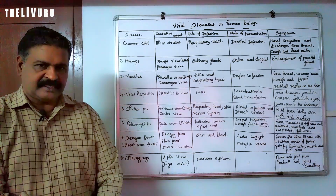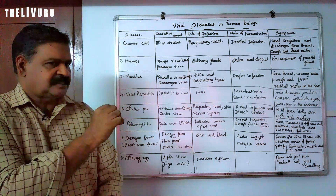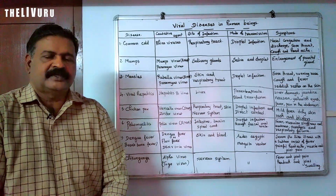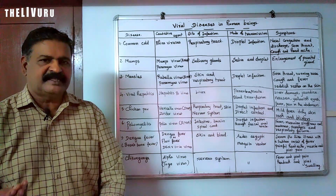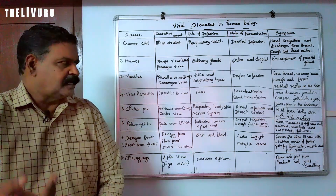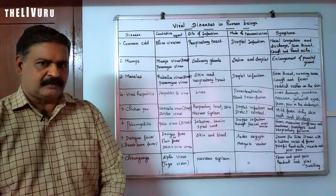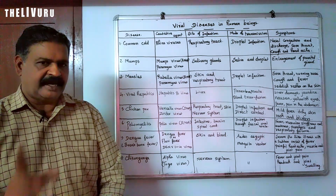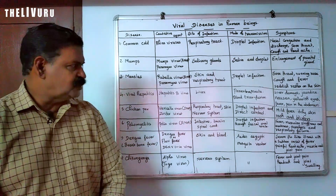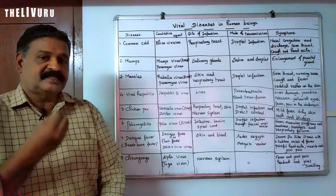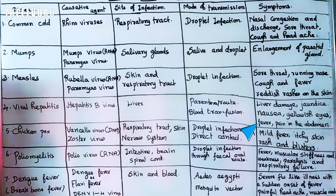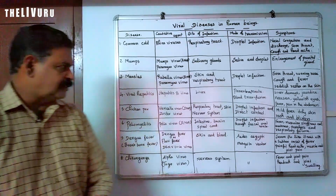The symptoms of viral hepatitis include liver damage and jaundice. The liver secretes more bilirubin, causing yellow skin color, yellow urine color, and yellowing of the eyes. Other symptoms include nausea — the urge to vomit — fever, and abdominal pain. Liver inflammation and damage are serious conditions.